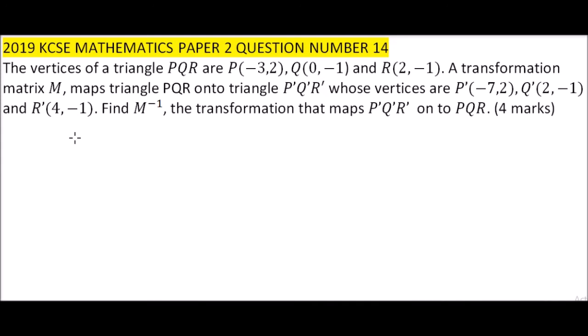The transformed vertices are P'(-7, 2), Q'(2, -1) and R'(4, -1). Find M^(-1), the transformation that maps P'Q'R' onto PQR. You get yourself 4 marks.